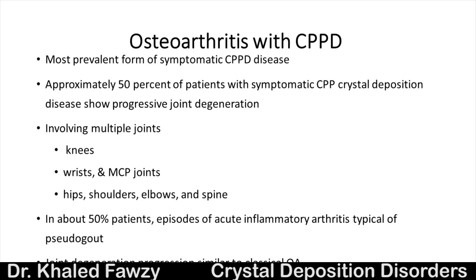Another entity is associated with osteoarthritis: approximately 50% of patients with symptomatic calcium pyrophosphate arthropathy with osteoarthritis progress to joint degeneration. This affects the knees, wrists, fingers, hips, shoulders, elbows, and spine. Additionally, 50% of these patients will experience acute episodes of pseudogout on top of that.